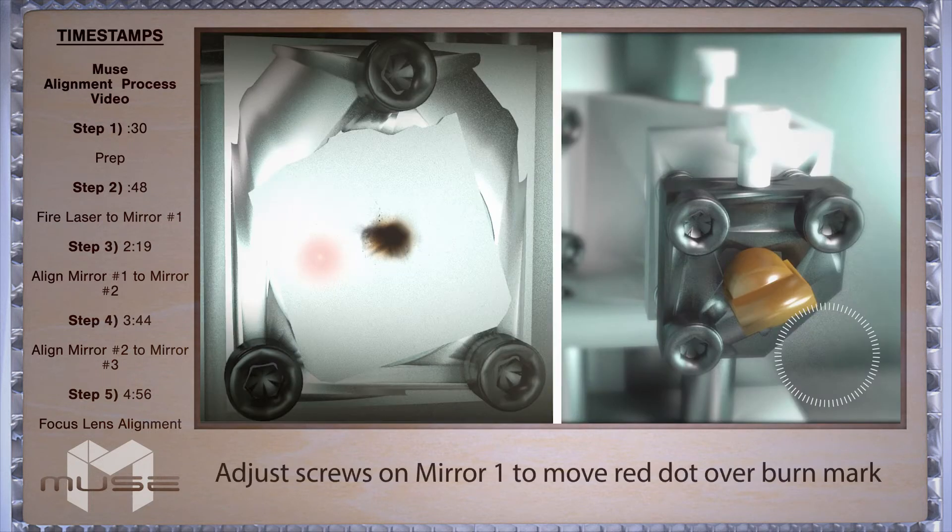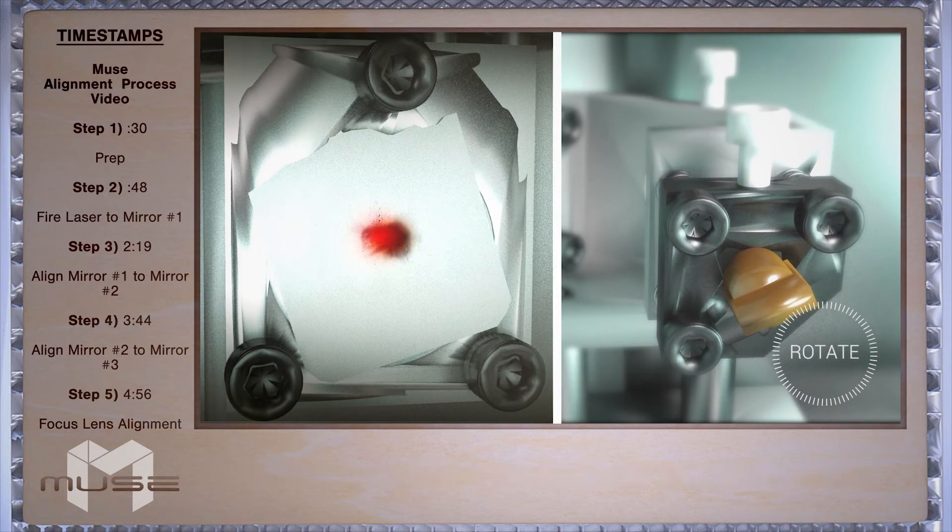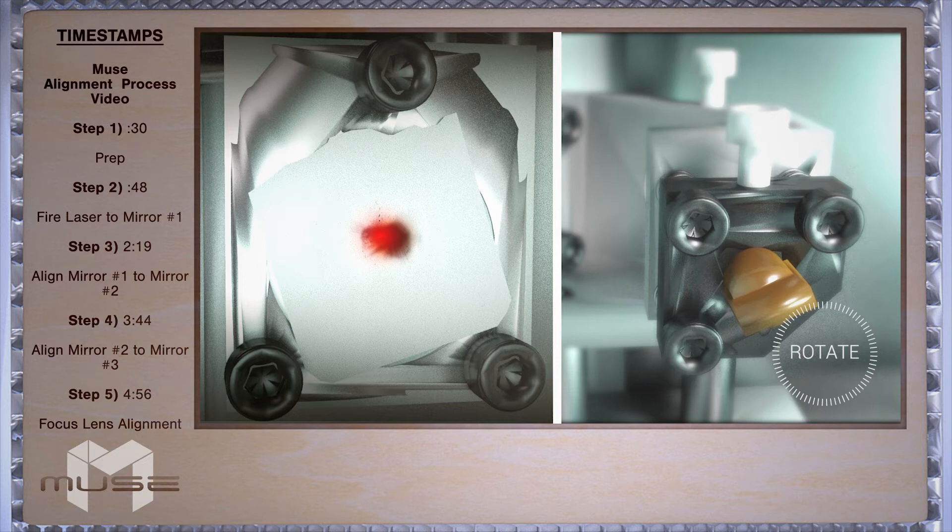We'll use our 2.5 inch hex key to adjust the screws so our red dot diode is on top of the test fire. Don't worry if that places the red dot away from the center of the mirror. We're going to adjust that later.